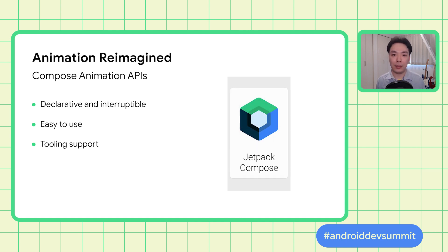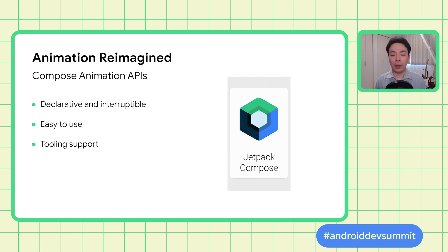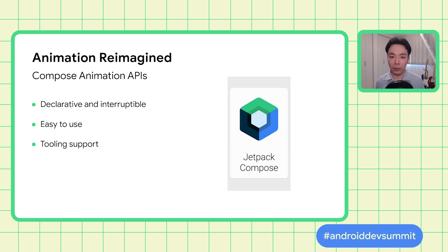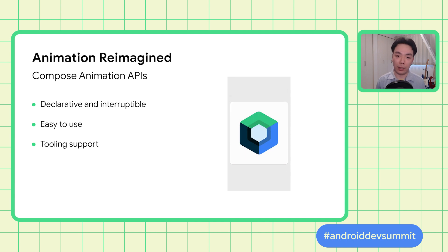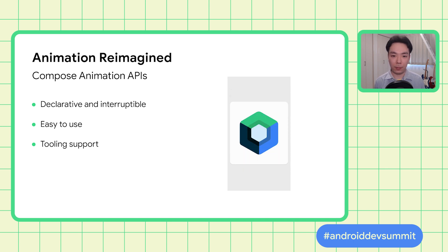Many APIs are declarative — you can write a concise definition of your animation in a declarative manner. It is also interruptible: when an animation is interrupted by another animation, the values from an ongoing animation are carried over to the new animation. They are easy to use, configured with reasonable default behaviors out of the box, and they are all highly customizable. Android Studio offers powerful tools to help implement complex animations.